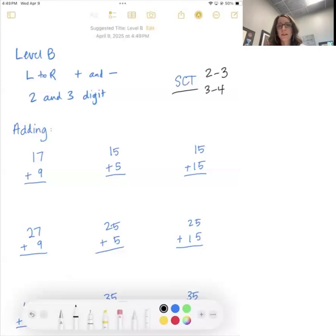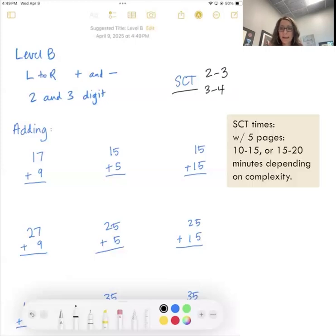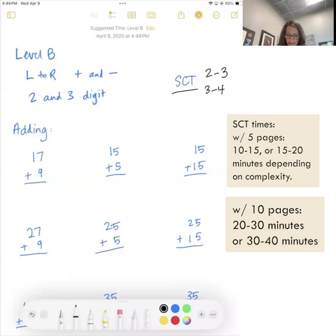So this is how you can figure out how quickly you're working based on what your workload is. If you have five pages, then it would be about 10 to 15 minutes or 15 to 20 minutes per packet per day would be the goal. And then if you're doing 10 pages, that would be like 20 to 30 minutes or 30 to 40 minutes based on which page. So let's get right into the addition.